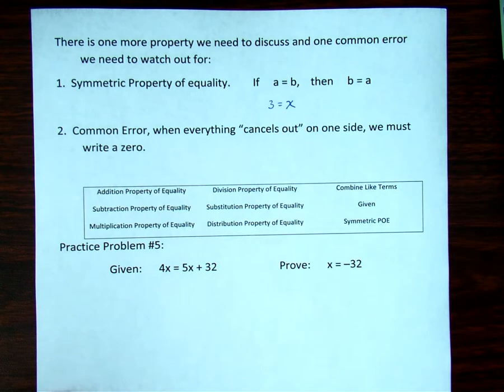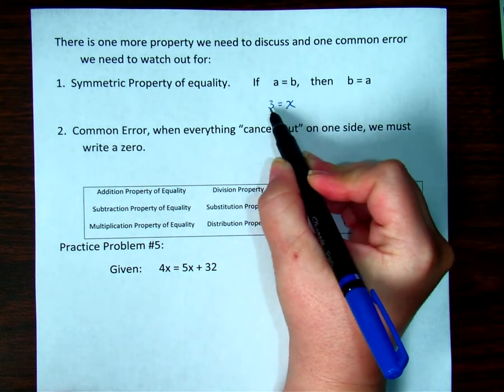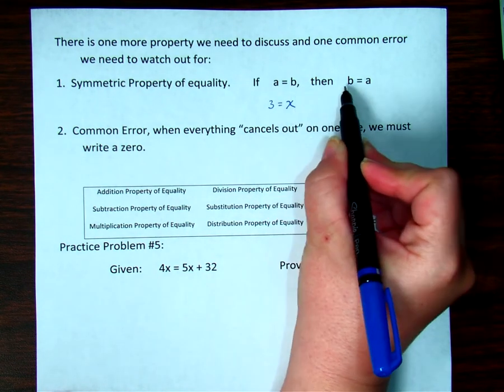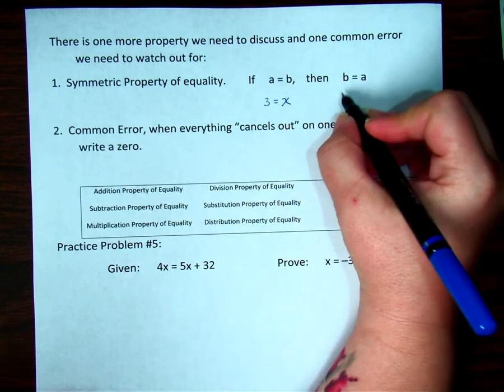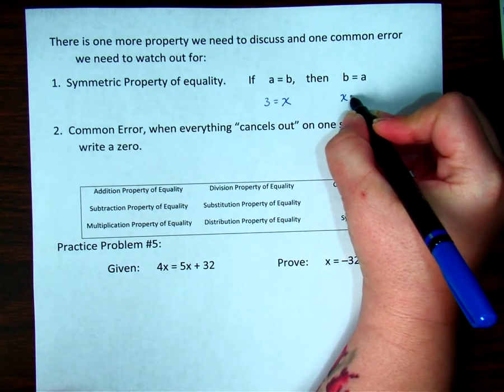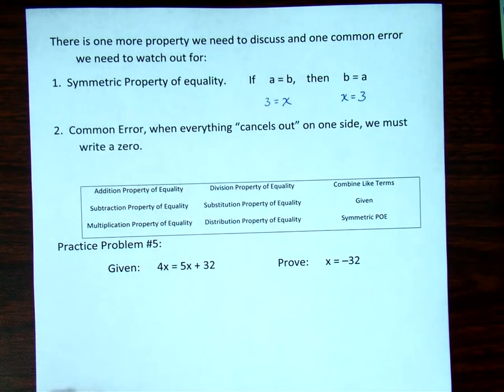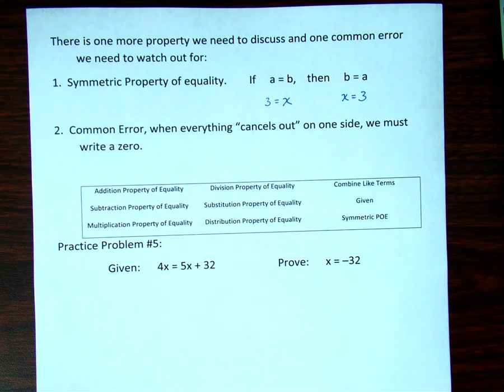but we're trying to prove that X equals 3. So we're just needing to get the X and the 3 on opposite sides. So if A equals B, then we can switch that and say B equals A. So if 3 equals X, then that means also X equals 3, because we're not allowed to just switch anything in a proof without having some sort of reason.